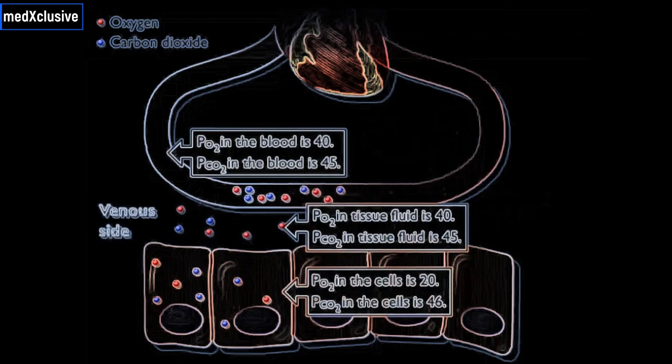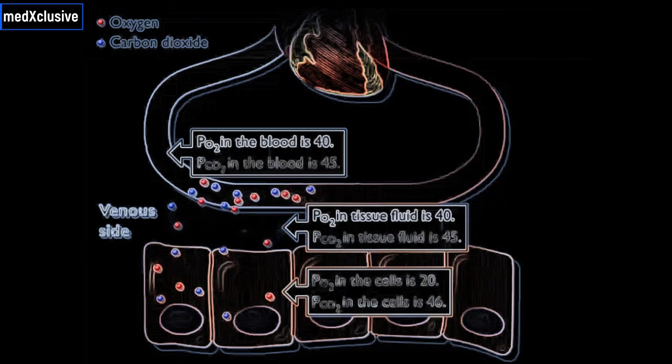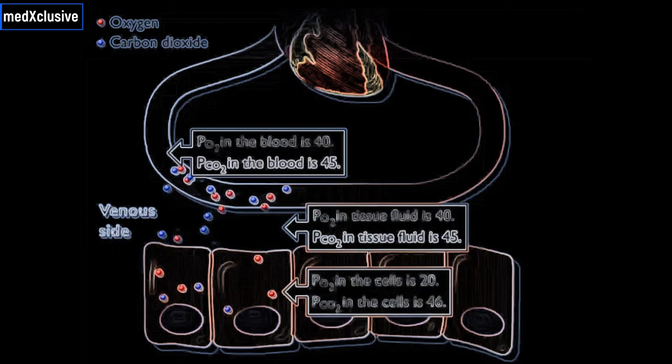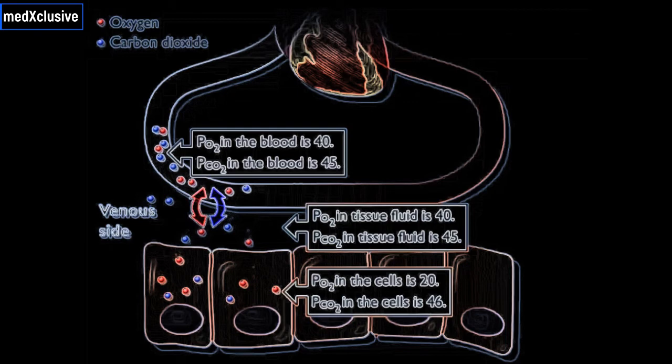At the venous ends of tissue capillaries, the PO2 in the blood is equal to the PO2 in the tissue fluid and the PCO2 in the blood is equal to the PCO2 in the tissue fluid, resulting in no more net movement of O2 or CO2. The blood now carries the O2 and CO2 to the lungs.